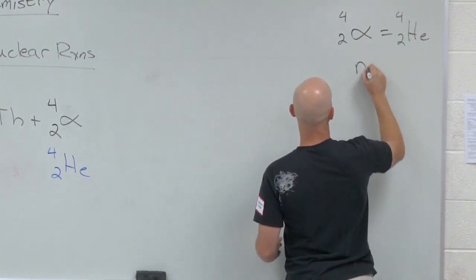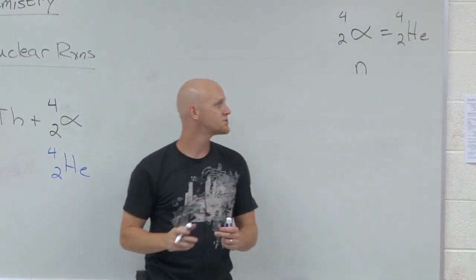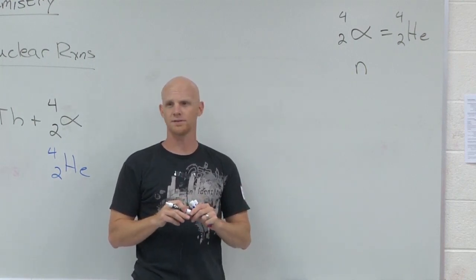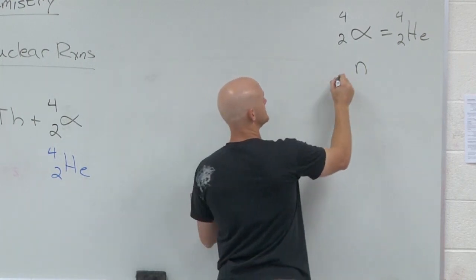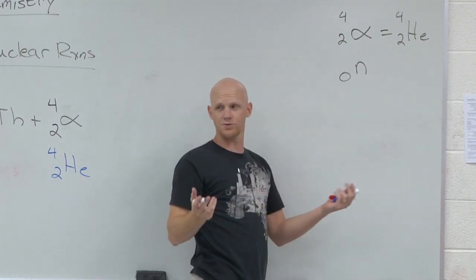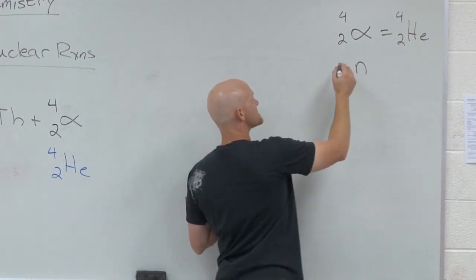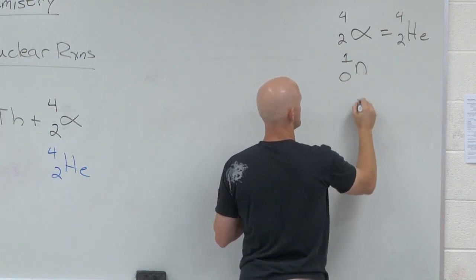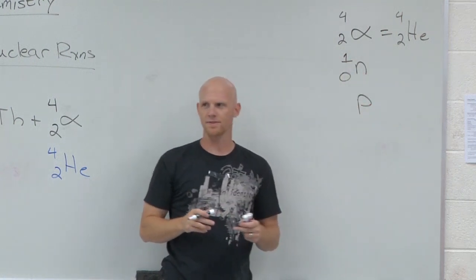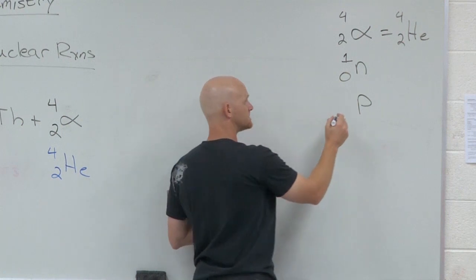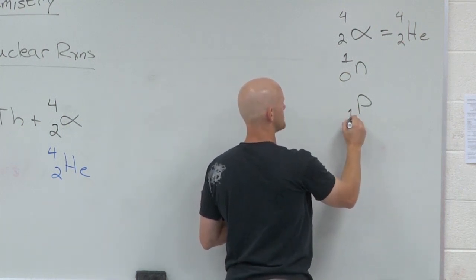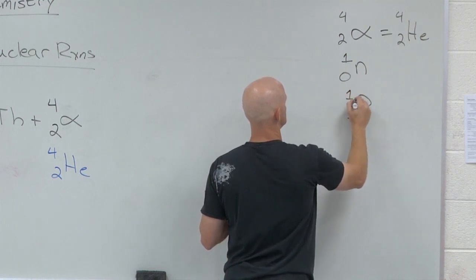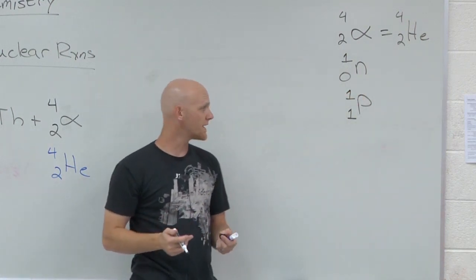You also got your neutron. Neutron we give the symbol lowercase n. What is the charge on a neutron? Zero. Good. That's why it's called the neutron. Neutral. And the mass number? One. Cool. What about a proton? That's another particle we'll talk about in this context. What's its charge? Plus one. And its mass number? Also one. Approximately one amu there as well.